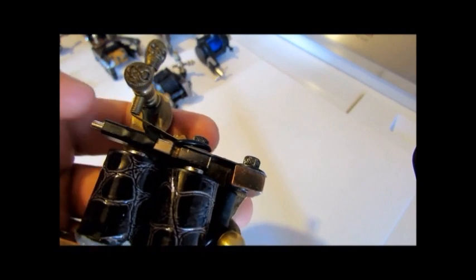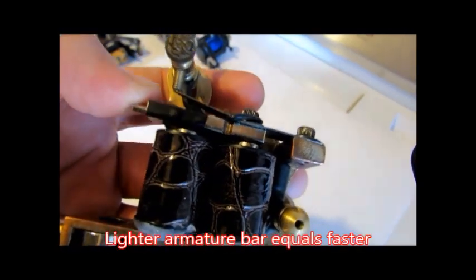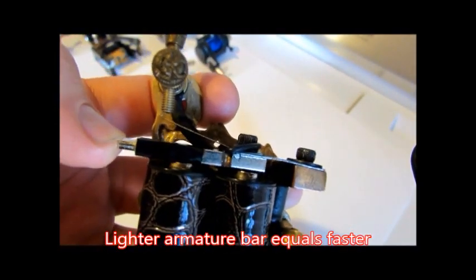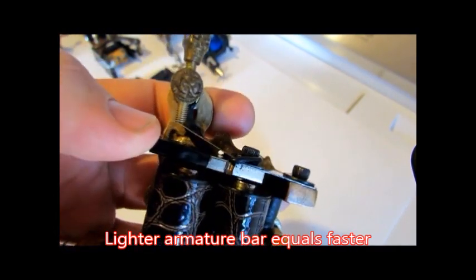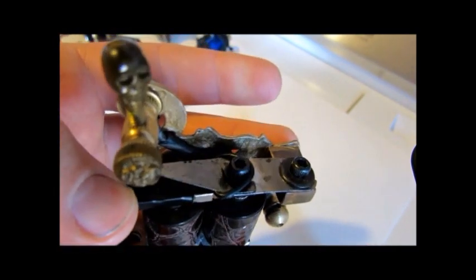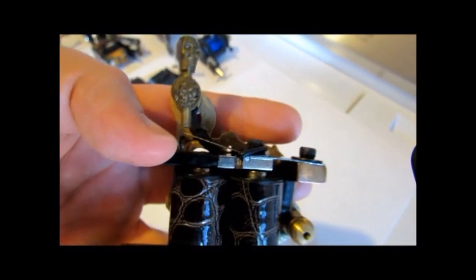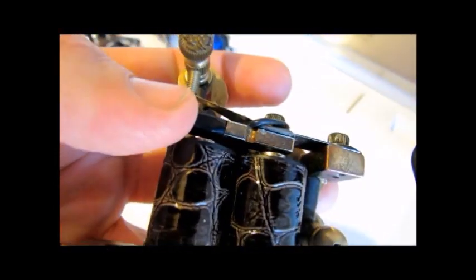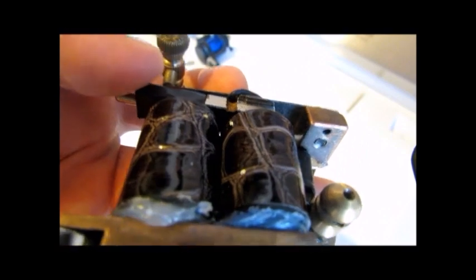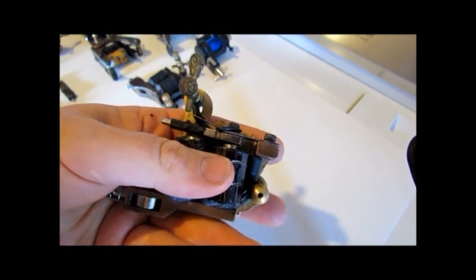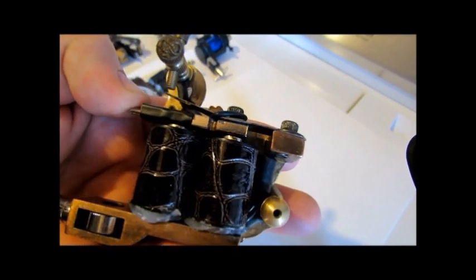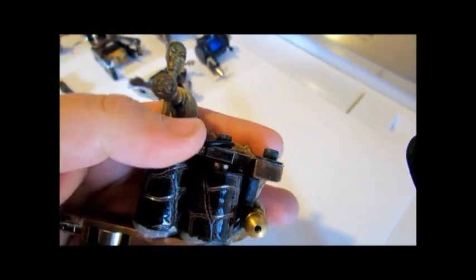You don't need a really heavy armature bar. For a liner, you can use a lighter armature bar. You can see I've notched out this armature bar. Fast machine, small gap, light armature bar.